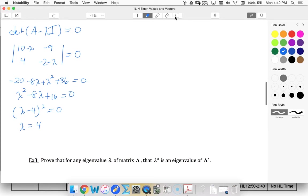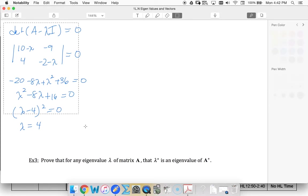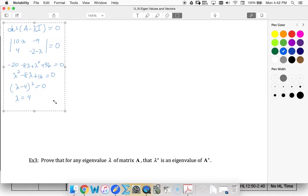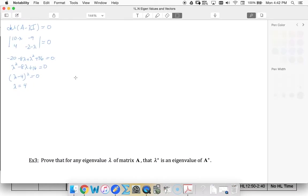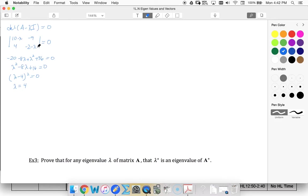So now I'm going to try and find my null space. For lambda equals 4, I'm going to have A minus lambda I times X equal to 0.